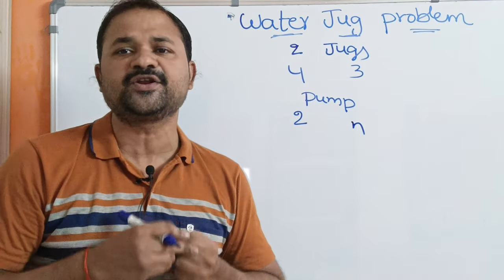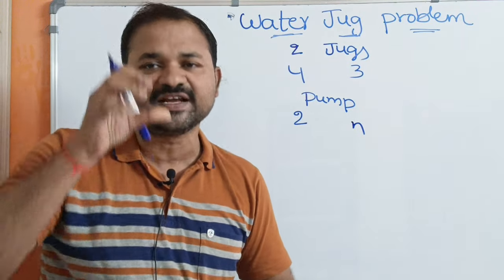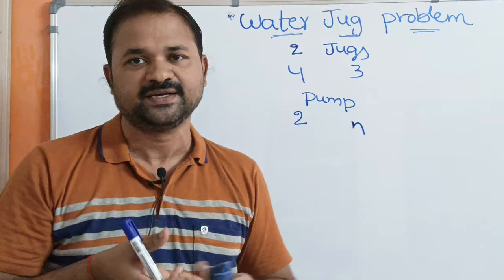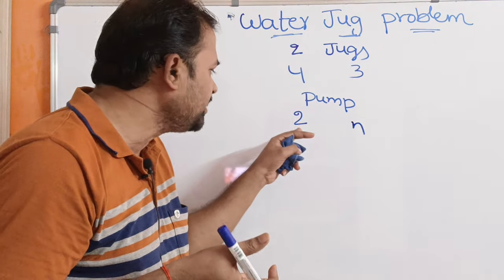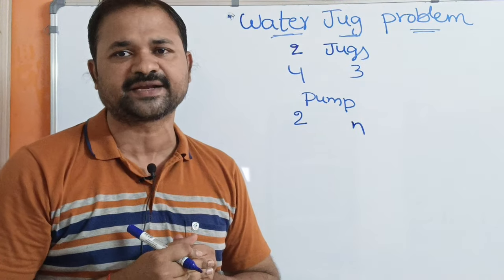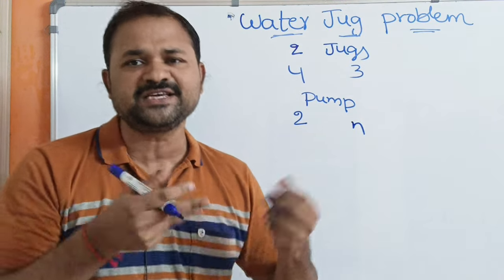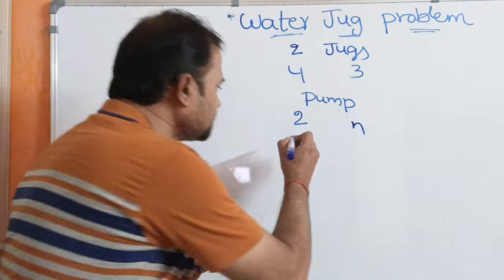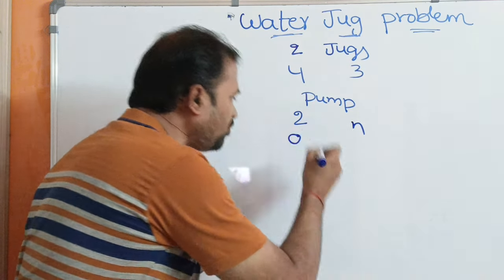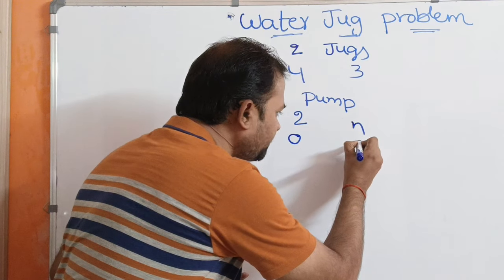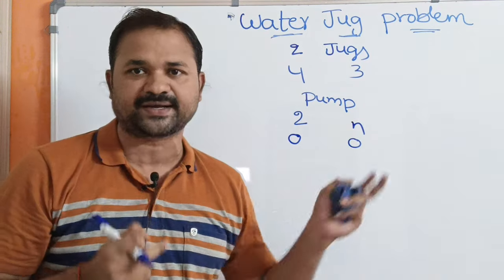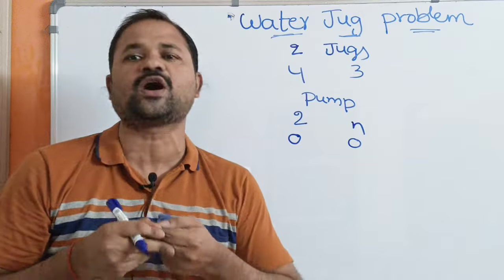There are no measuring marks on the jugs. If there were any marks, we could directly fill 2 liters of water in the 4-liter jug — that is the problem here. So let us see how we can solve it. Initially, the 4-liter water jug contains 0 liters and the 3-liter jug also contains 0 liters. So the initial state is (0, 0).